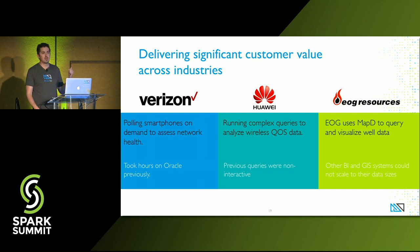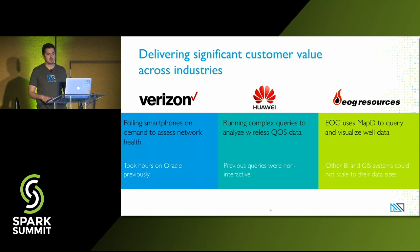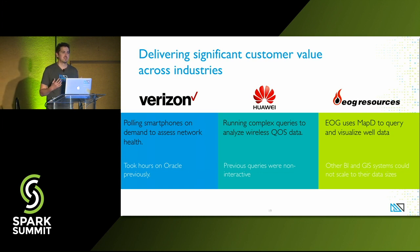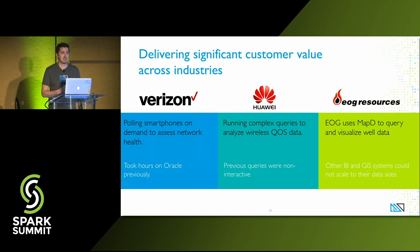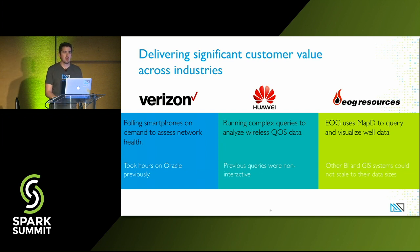MapD was launched in 2013 and went into production at the beginning of last year. We've got a great set of early customers across a variety of use cases and verticals. Verizon Wireless is one of our earliest and biggest customers — using MapD to look at smartphone data coming off phones and assessing their network. Previously using Oracle, some queries would take hours over 10 billion records. With MapD, they have sub-second response time. They use Immerse to visualize data and Tableau on top of us. Huawei is analyzing wireless data from their network. EOG, a big oil and gas company, is doing visualization of oil well data.